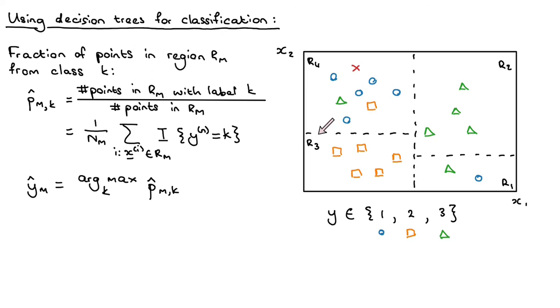Similarly, any point in here we will assign to the orange square class or class number 2. Any point here, we will assign to class number 3. And then here, we've got a little bit of uncertainty about which class we will assign it to, but clearly it will either be class 3 or class 1.